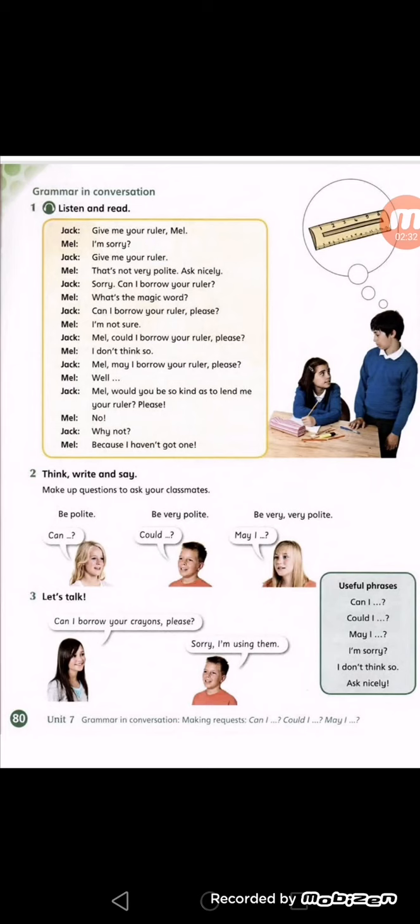Jack says: 'Give me your ruler, Mel.' Mel replies: 'I'm sorry.' Jack repeats: 'Give me your ruler, Mel.' — meaning 'Give me the ruler.' Mel tells him: 'That's not very polite. Ask nicely.' She's telling him his way of asking is not very polite — ask more politely.